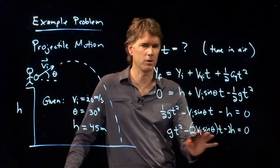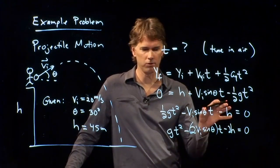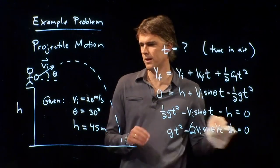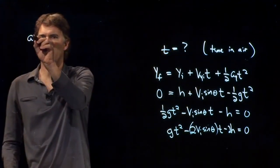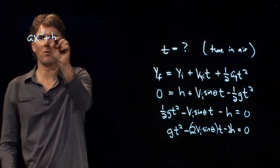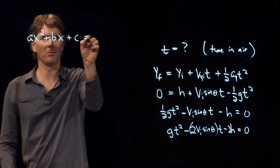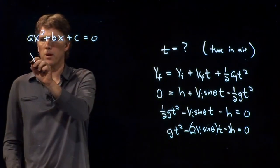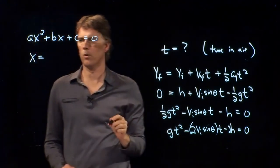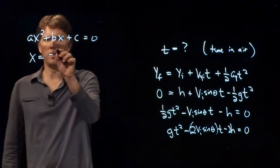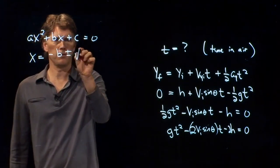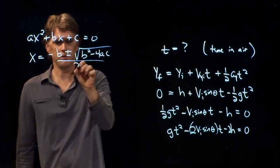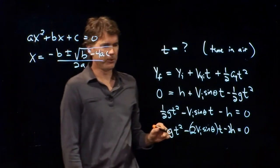And just for kicks, let's multiply everything by two. So this will become GT squared minus 2VI sine theta times T minus 2H equals zero. And now that's a quadratic equation and we can solve it for T.